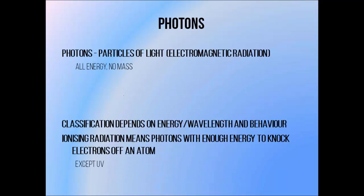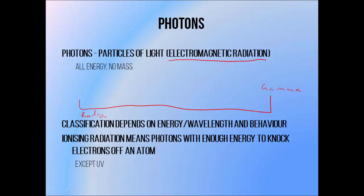Photons are particles of light, or in more physics terms, of electromagnetic radiation. Electromagnetic radiation exists as a spectrum which contains many different kinds of radiation, divided up according to their energy. At opposite ends of the spectrum, we have radio waves and high energy photons like gamma rays and X-rays. Radio waves are down the low energy end of the spectrum, and gamma rays and X-rays are up the high energy end. In visible light, the part we can see is somewhere near the middle, with red being of lower energy than blue.